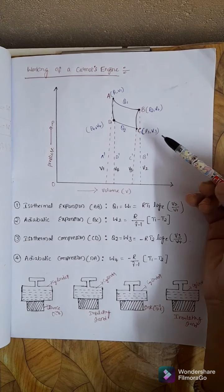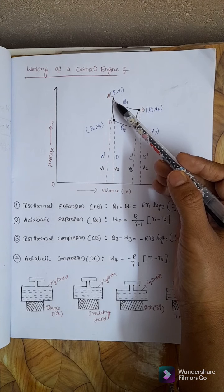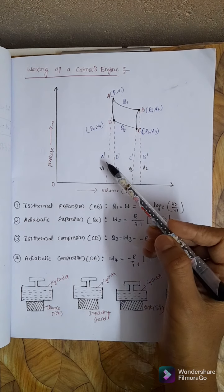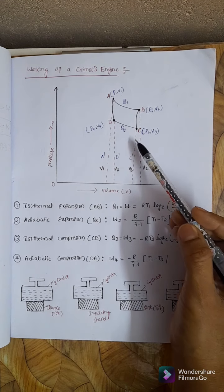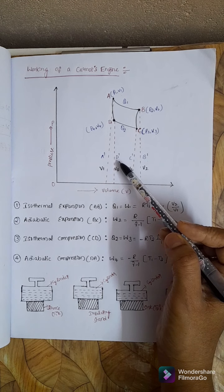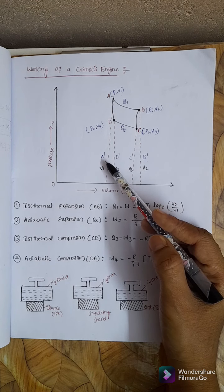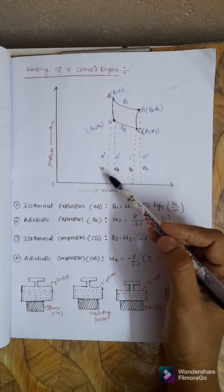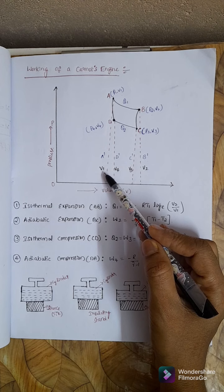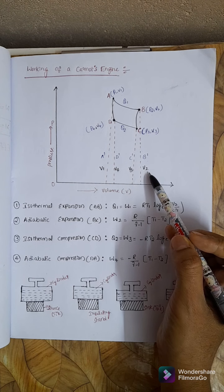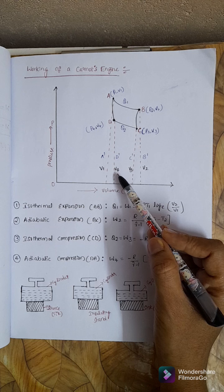In the PV diagram, dotted lines A', B', C', D' are drawn from points A, B, C, and D respectively, showing the initial and final states. The volumes are labeled V1 at point A, V2 at point B, V3 at point C, and V4 at point D.